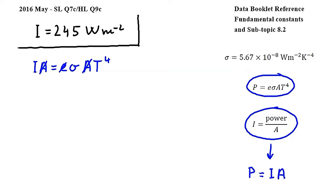Rearranging for T, so dividing by sigma and taking the fourth root, we get T is equal to I over sigma under the fourth root.